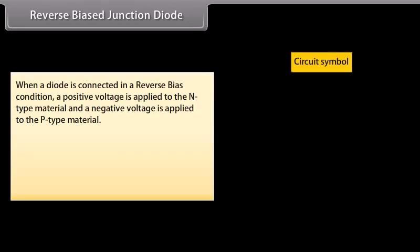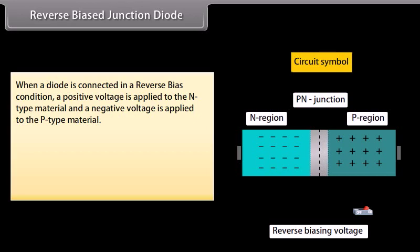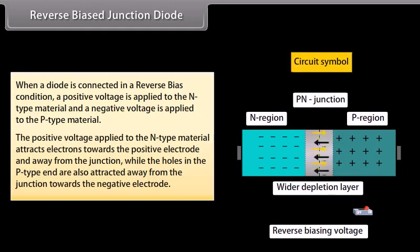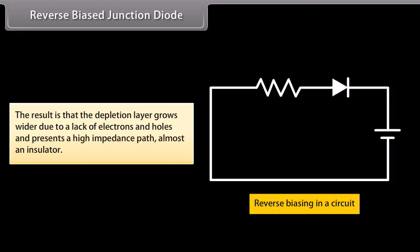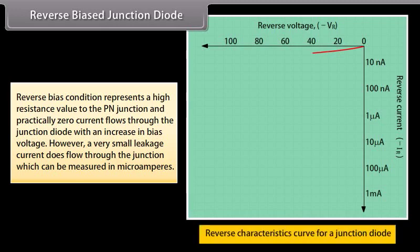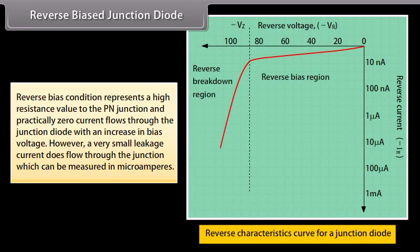When a diode is connected in a reverse biased condition, a positive voltage is applied to the N-type material and a negative voltage is applied to the P-type material. The positive voltage applied to the N-type material attracts electrons towards the positive electrode and away from the junction, while the holes in the P-type end are also attracted away from the junction towards the negative electrode. The result is that the depletion layer grows wider, presenting a high impedance path, almost an insulator. Reverse bias represents a high resistance value of the P-N junction, and partially zero current flows through the diode. However, a very small leakage current does flow through the junction, measurable in micro-amperes.